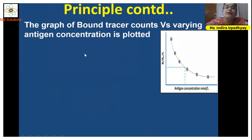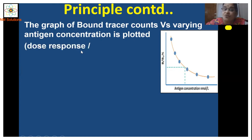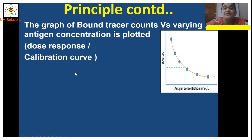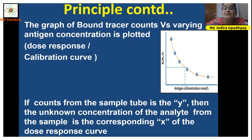A graph of bound tracer counts versus varying antigen concentrations is plotted, which is nothing but the dose-response or calibration curve. If the counts from the sample tube is the Y-value, then the unknown concentration of the analyte from the sample is the corresponding X on the dose-response curve.